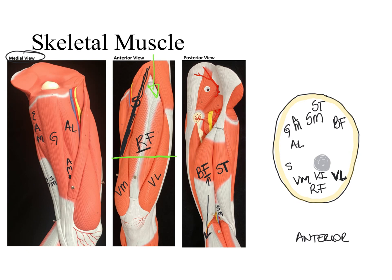When we look at our thigh, we have three different compartments: the anterior compartment, the posterior compartment, and the medial compartment. The anterior compartment includes the quadriceps femoris muscles and the sartorius. The posterior compartment includes the hamstring muscles. The medial compartment includes the adductor muscles — gracilis, adductor magnus, and adductor longus. The green lines dividing the thigh into these compartments represent the deep fascia, the fascia of muscles, which surrounds groups of muscles and provides extra stability and protection.